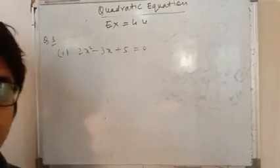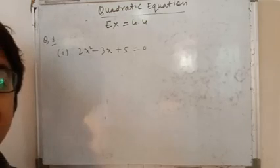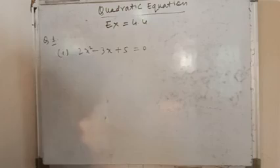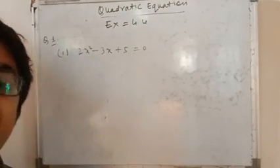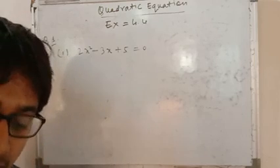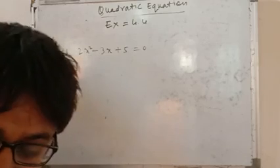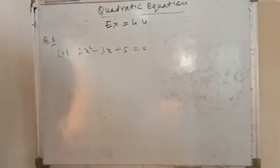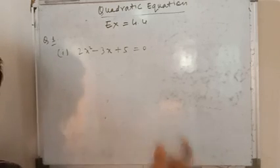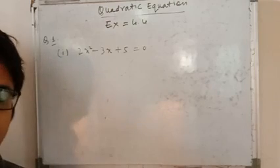Welcome everyone. Now Exercise 4.4 on the basis of nature of the roots in quadratic equations. See page number 91 from exercise 4.4 and question number one: find the nature of the roots of the following quadratic equation. If the real roots exist, find them. It means here you have to find first the nature of the root. If the root exists, means if it will come real, then you have to find the value of zeros.